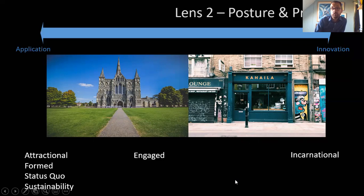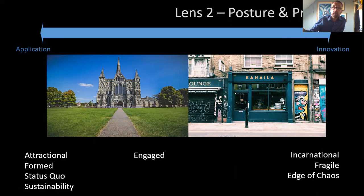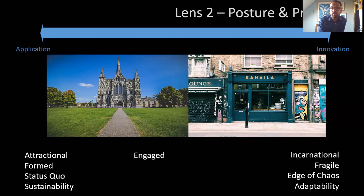At the other end of the spectrum is much more of an incarnational mode of mission — we need to make a journey into another context and learn from it. We don't have all the answers, we don't assume that what we have is exactly what people want, and we need to listen, engage, and build relationships. Therefore church is a kind of fragile thing — it's always adapting, and once it gets too solid into fixed forms the danger is that we're excluding as many people as we're including. So fragility is actually something to be welcomed. Similarly, the edge of chaos — between being so ordered we're slow to adapt or so chaotic we get nothing done — is a liminal space where creative and innovative things take place. There's a value to adaptability.